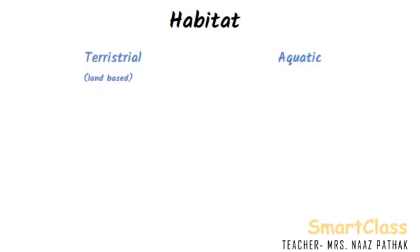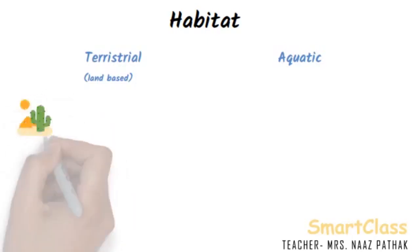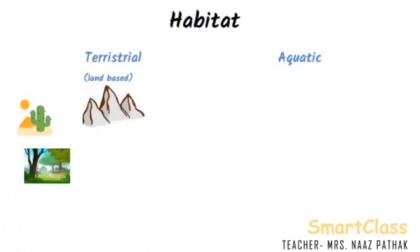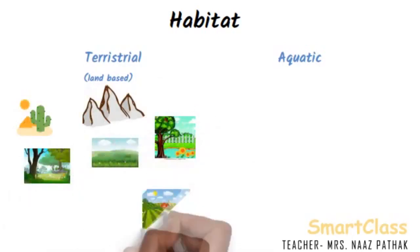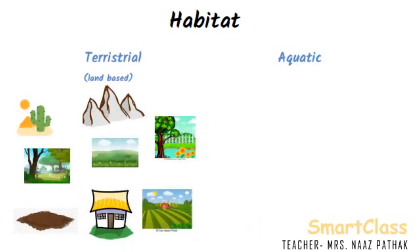A land-based habitat is called a terrestrial habitat. Thus, the organisms which live on land are said to live in a terrestrial habitat. Some of the examples of terrestrial habitats are desert, mountain, forest, grassland, garden, field, soil and homes.